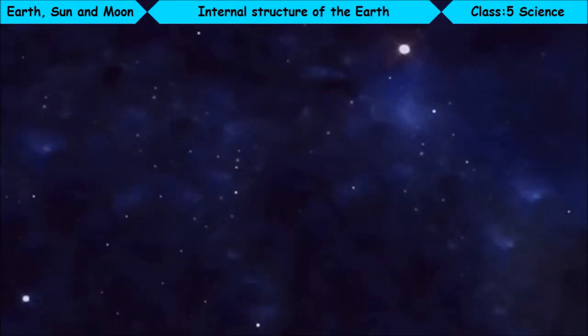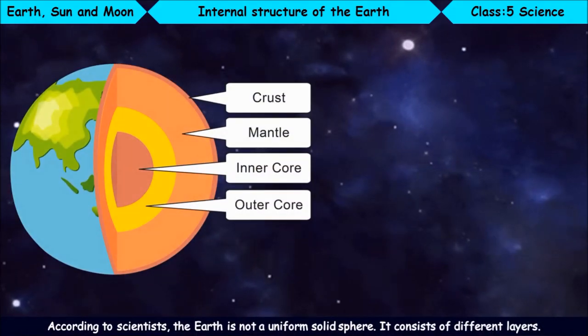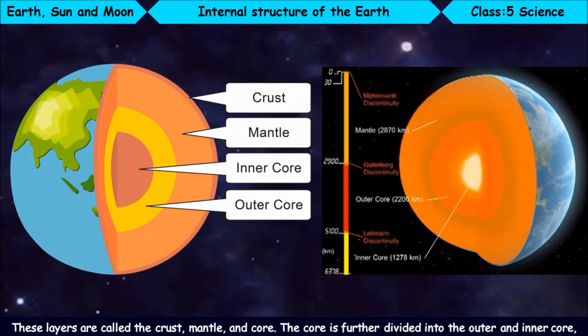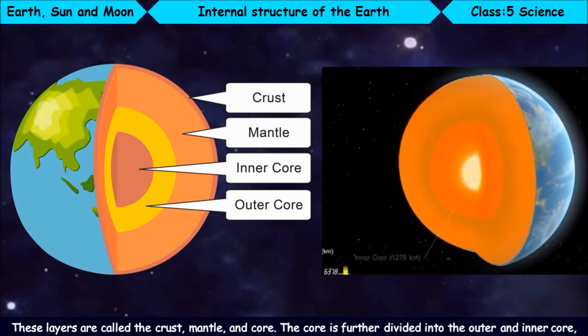Internal structure of the Earth. According to scientists, the Earth is not a uniform solid sphere. It consists of different layers. These layers are called the crust, mantle, and core. The core is further divided into the outer and inner core.